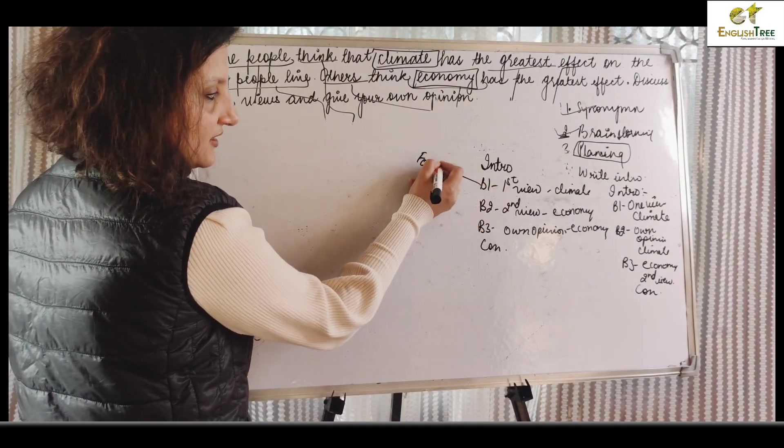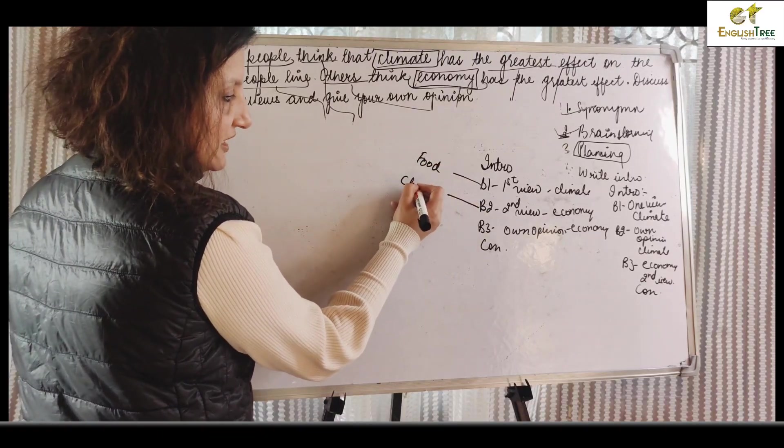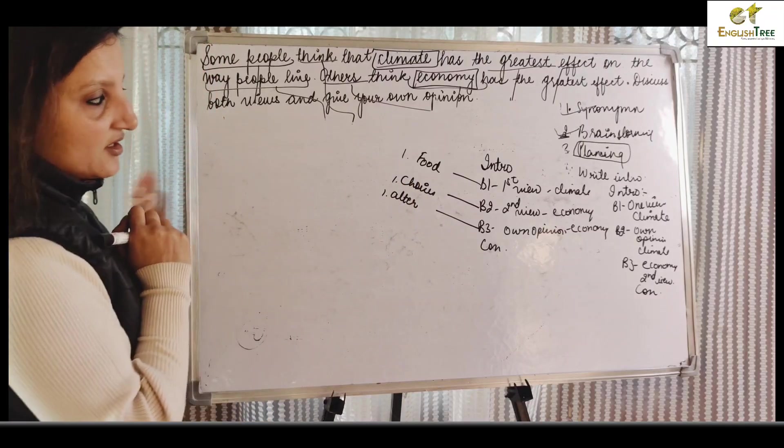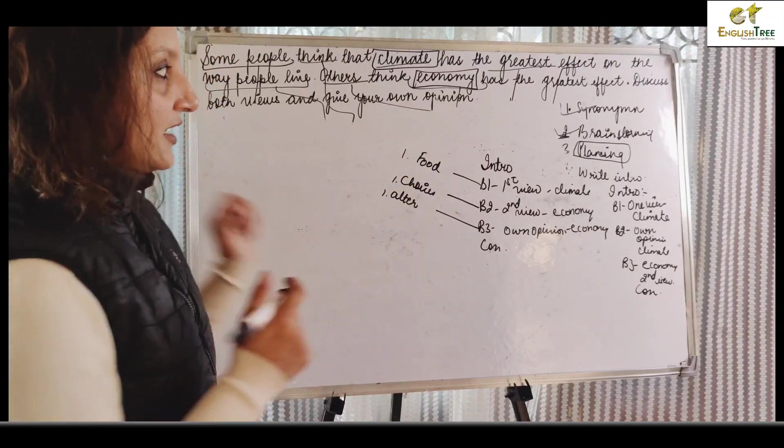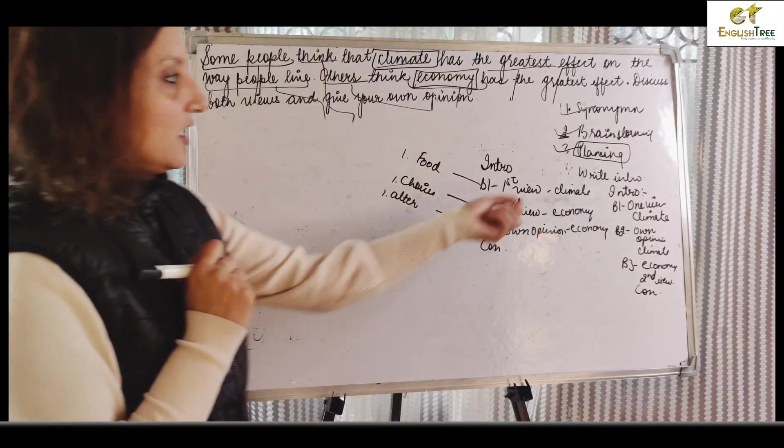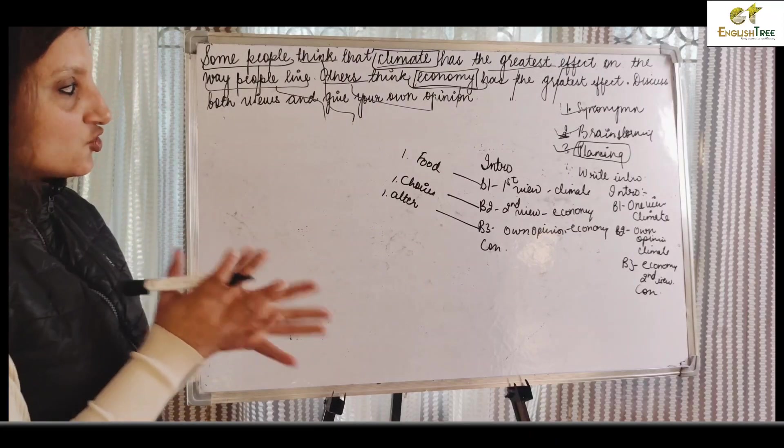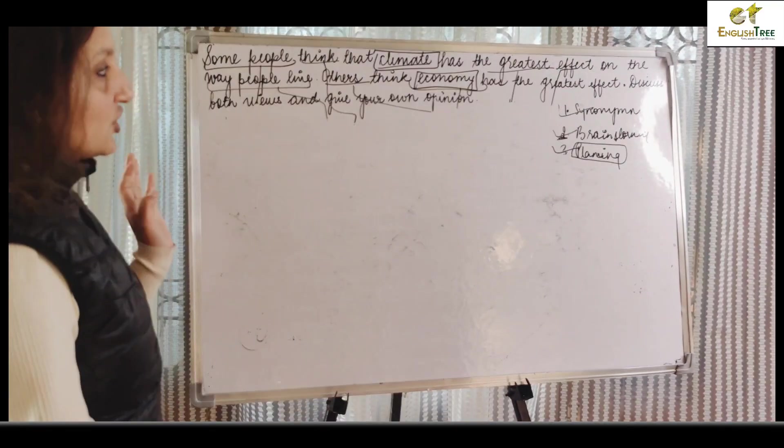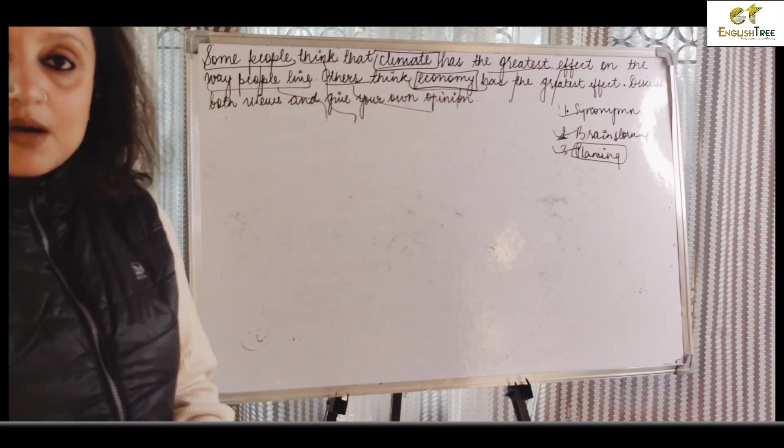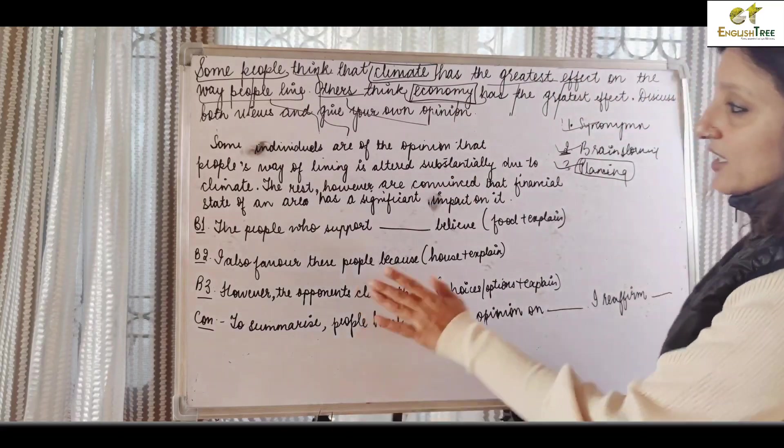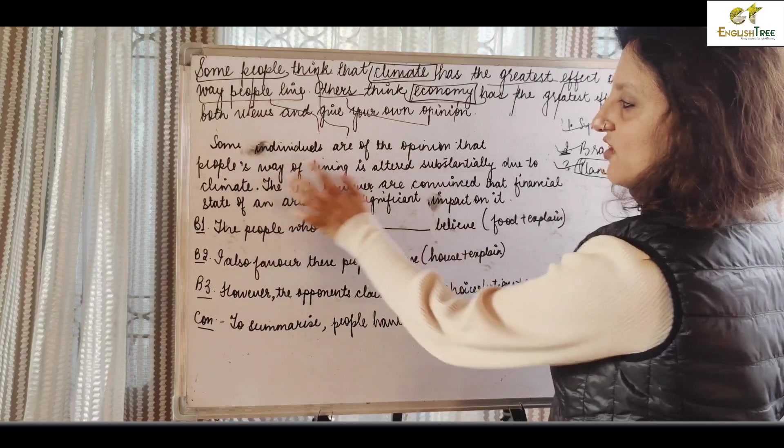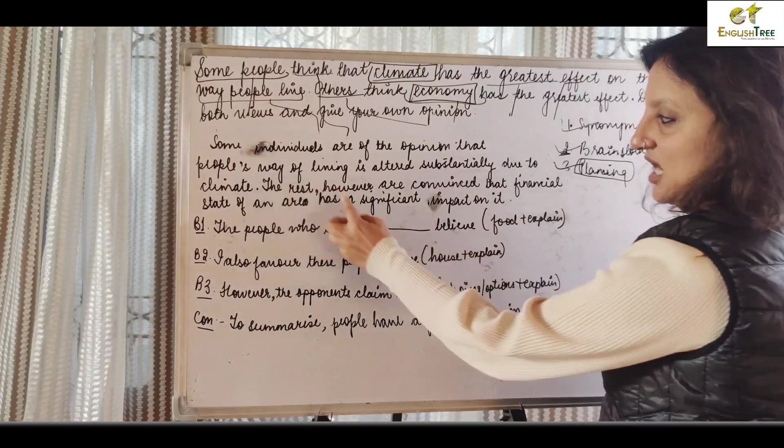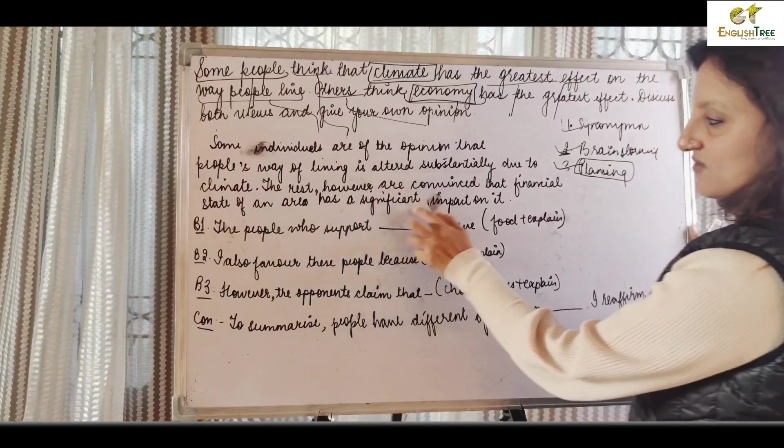Climate we have food and house points. Economy we talk about choices and alter circumstances. Now we have an introduction and understand the structure. In the introduction, we have changed words - some individuals are of the opinion that people's way of living is altered substantially due to climate. I have changed meaning. The rest however are convinced that financial state of an area has a significant impact on it.